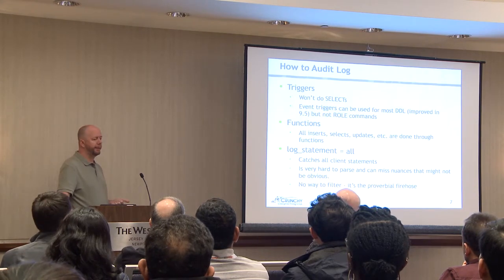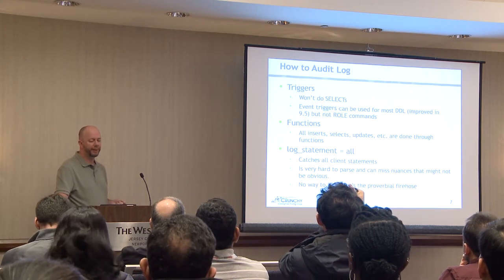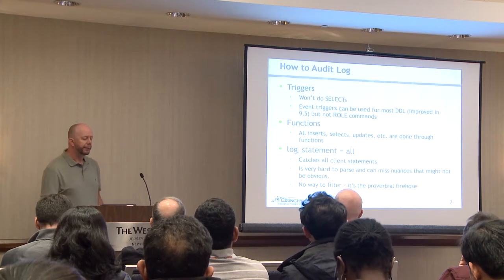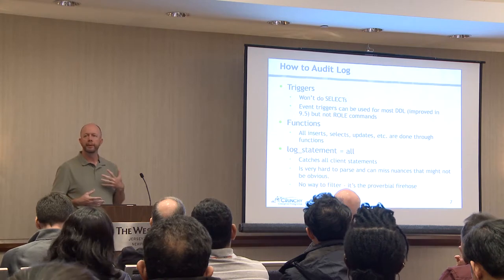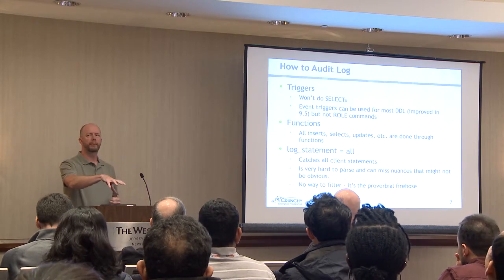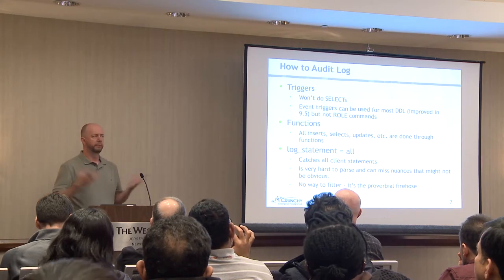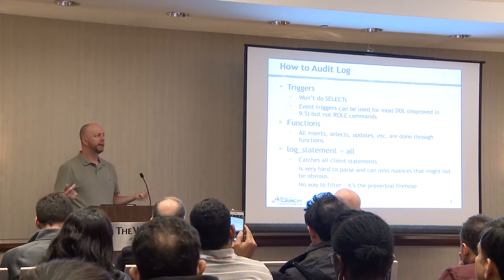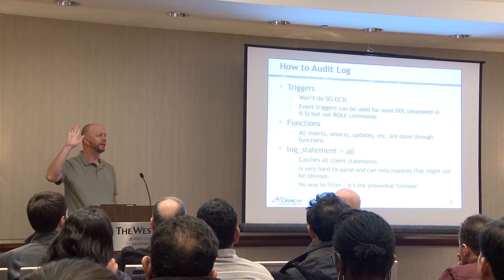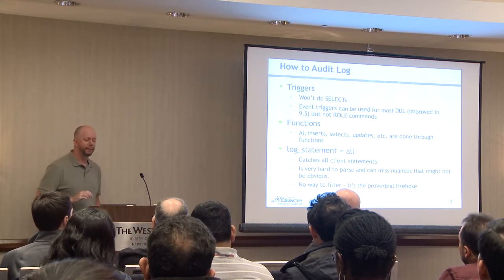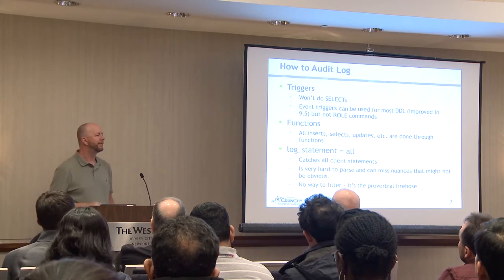The first auditing approach is using triggers. In Postgres you can set up insert, update, delete triggers, and whenever that trigger fires you can take the information being inserted, updated, or deleted and put it into an audit table, giving you an audit trail at least for modifications. More than half the room has written or seen these triggers — I've written them probably ten times over my career in different forms.